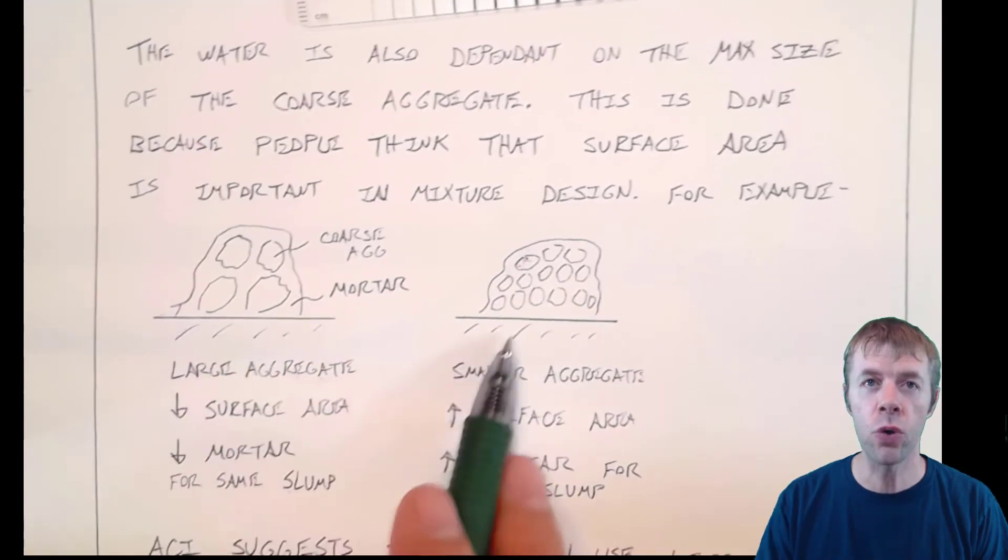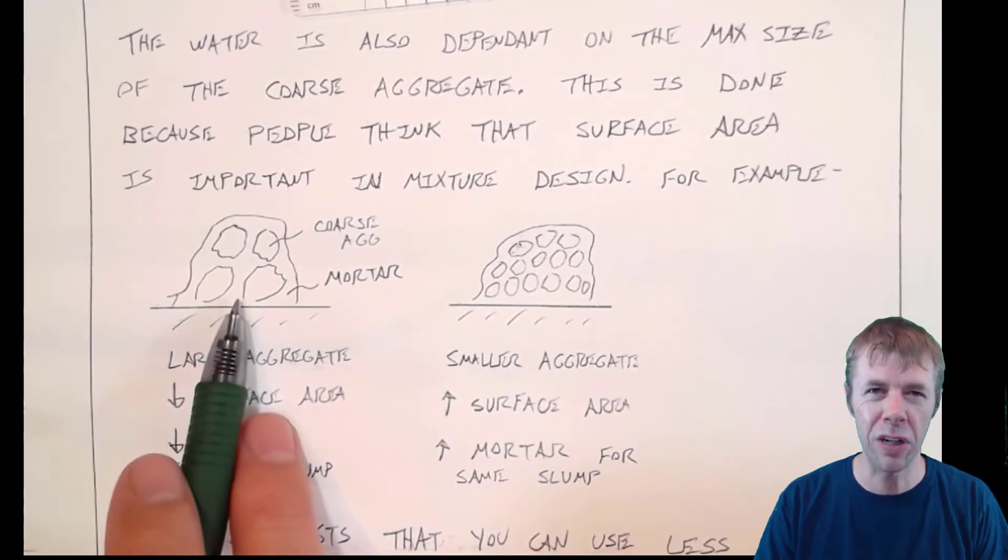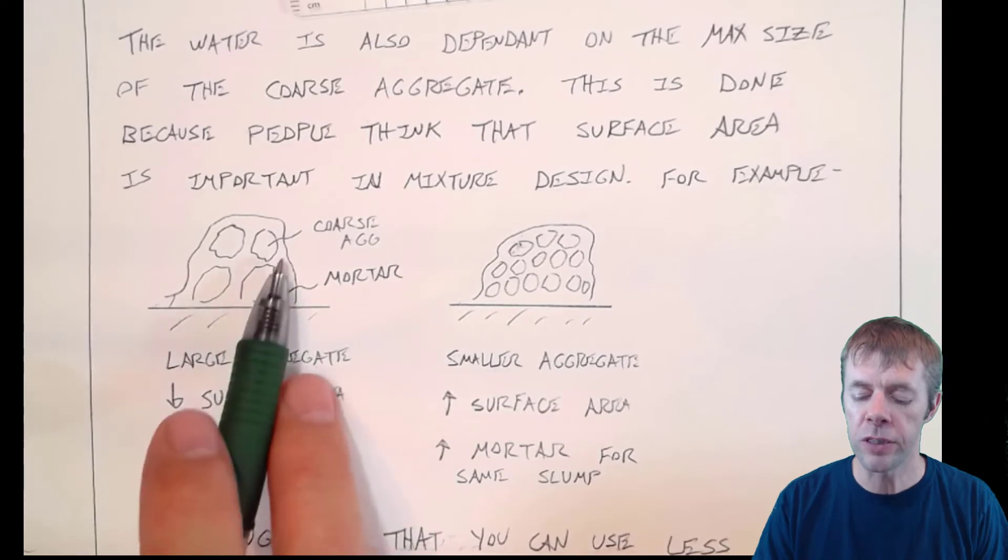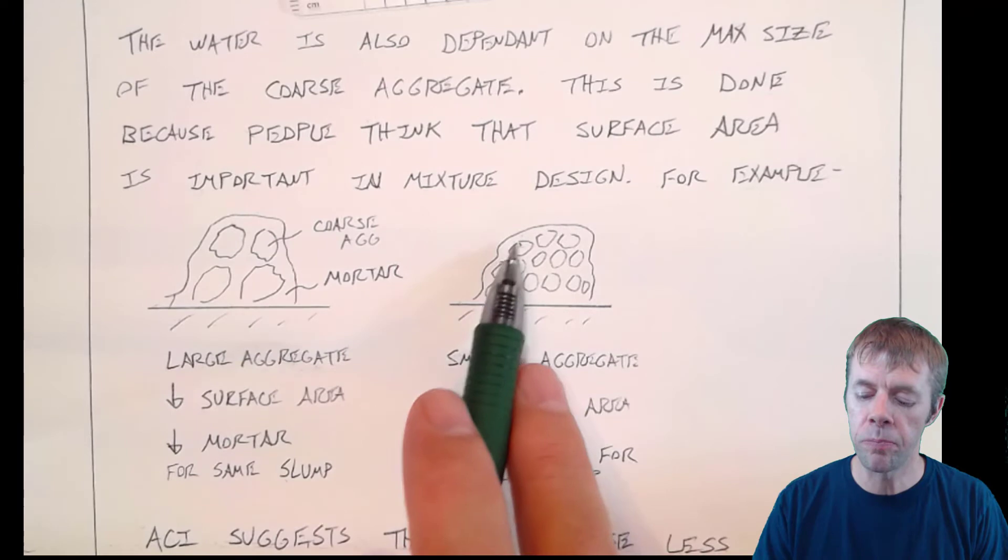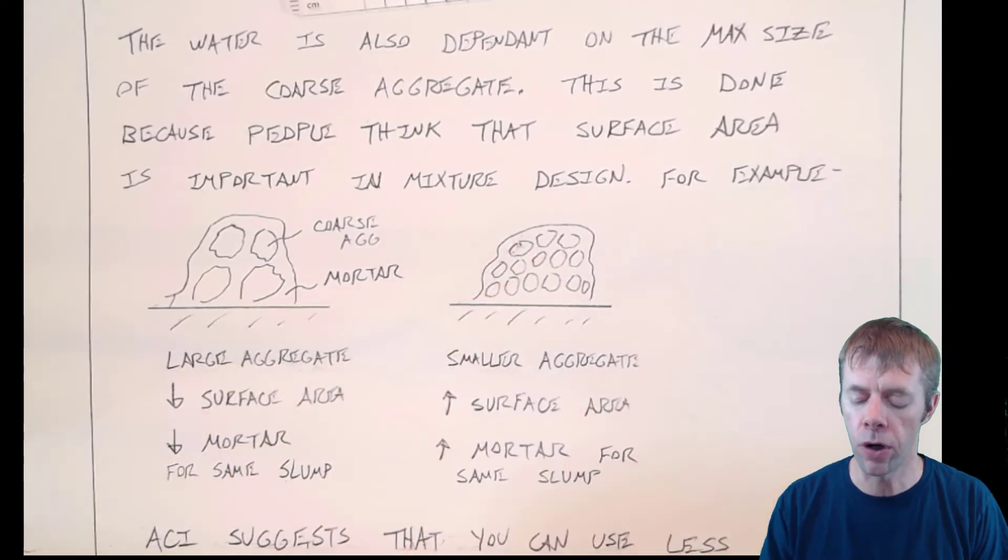not only is slump important but the maximum nominal aggregate size is also important. This is done because people think that the surface area is very important in the mixture design. The surface area of the aggregates is what I'm saying. For example,